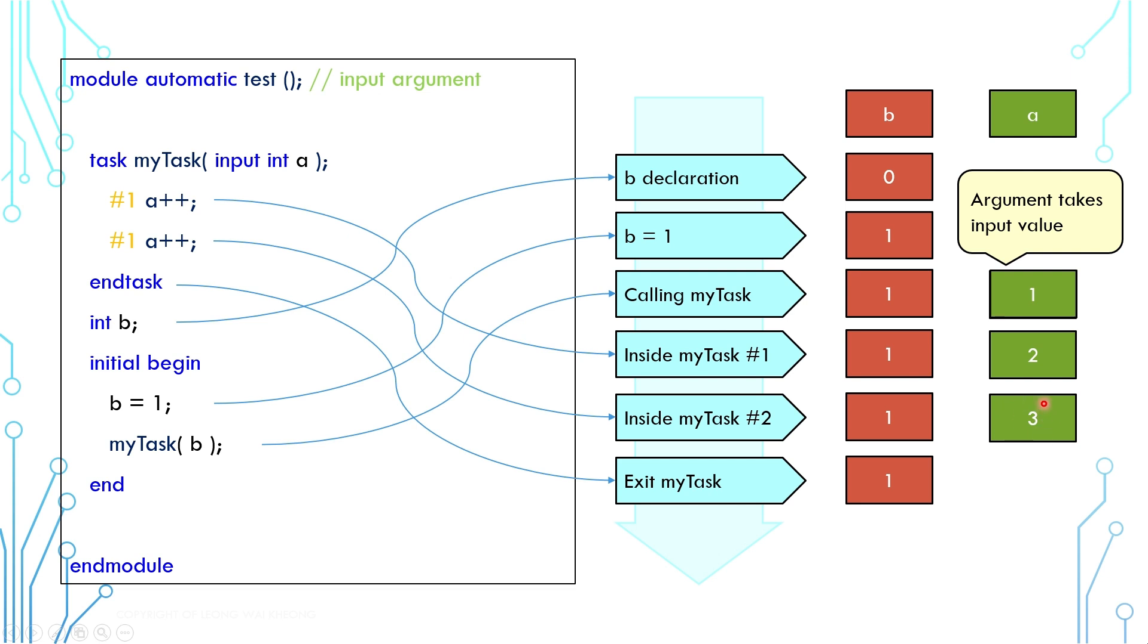One thing to notice is that regardless of how A is changing within the task, B is not affected at all. This is a typical passing by value example. The caller variable simply passes the value into the argument and is never affected by the argument.